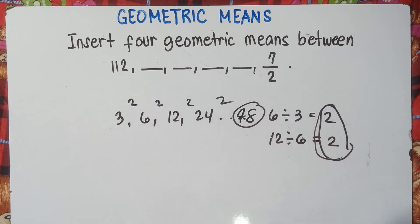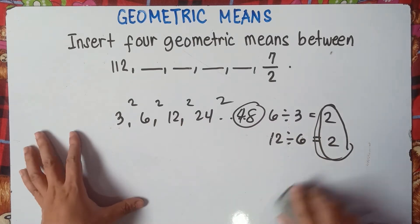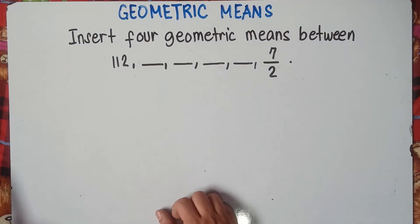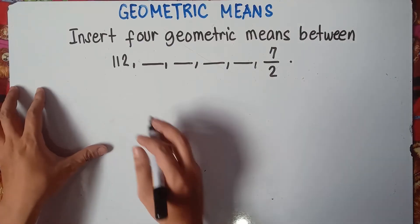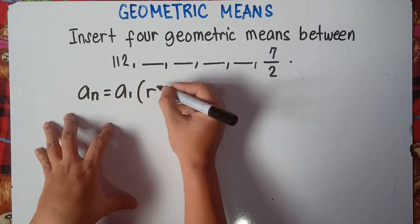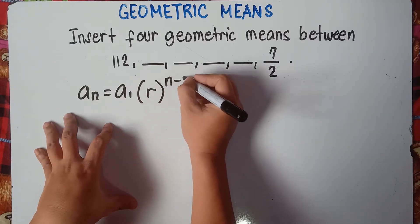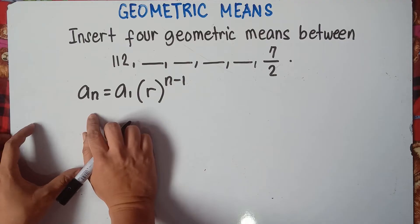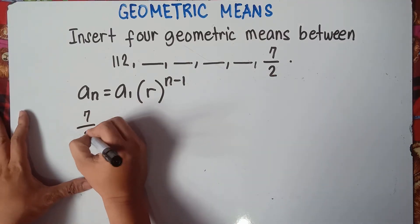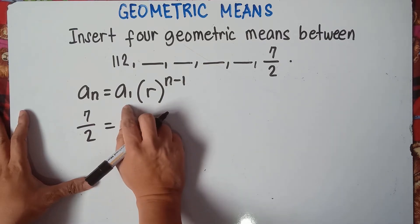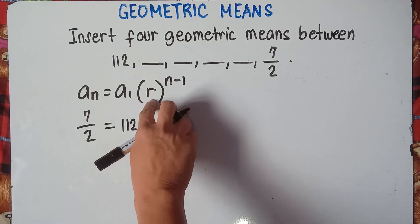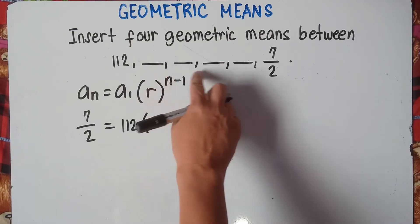To get the common ratio, divide the second term by the first term. The formula in geometric sequence is: a sub n equals the first term multiplied by the common ratio raised to the power of n minus 1. Our a sub n is the last term, so we have 7 over 2, equals a sub 1 which is 112, times r raised to the power of n minus 1.